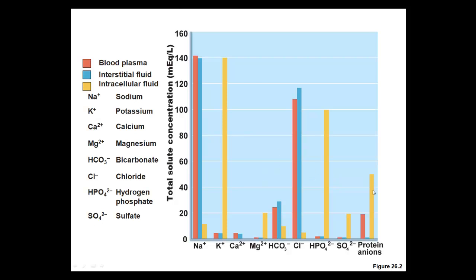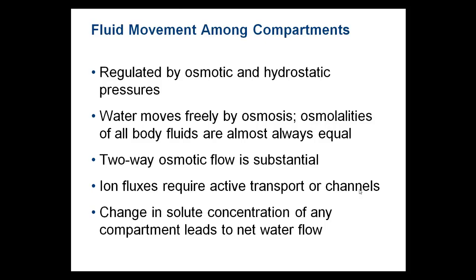Here is a distribution overview comparing blood plasma (shown in red), interstitial or extracellular fluid, and intracellular fluid (shown in yellow). Sodium concentration between plasma and extracellular fluid is essentially the same, while intracellular sodium is fairly low. Potassium is the reverse — low outside, high inside. You can compare intracellular and extracellular concentrations of all these solutes along this chart.